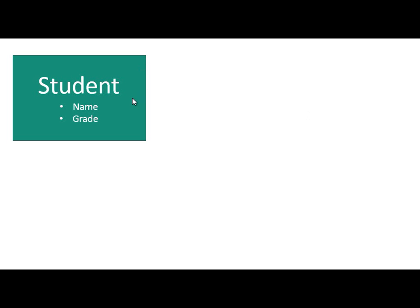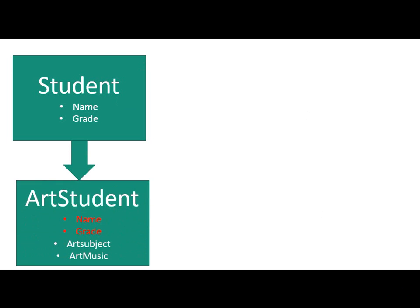Let us say you have an object student which has two properties: name and grade. Now you want to create another object named ArtStudent, and that object is going to have properties from the student object. For example, ArtStudent contains properties name and grade which come from student, and ArtSubject and ArtMusic — these two properties are specific to ArtStudent. So we can say that ArtStudent is going to use student object as prototype.